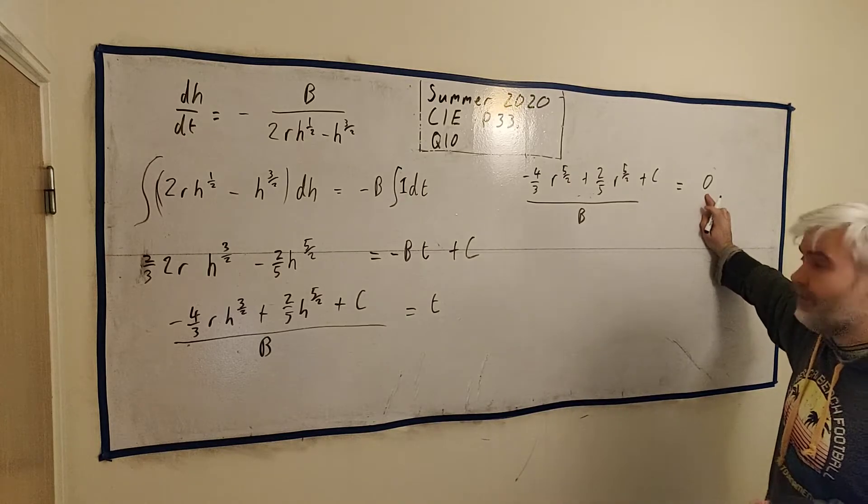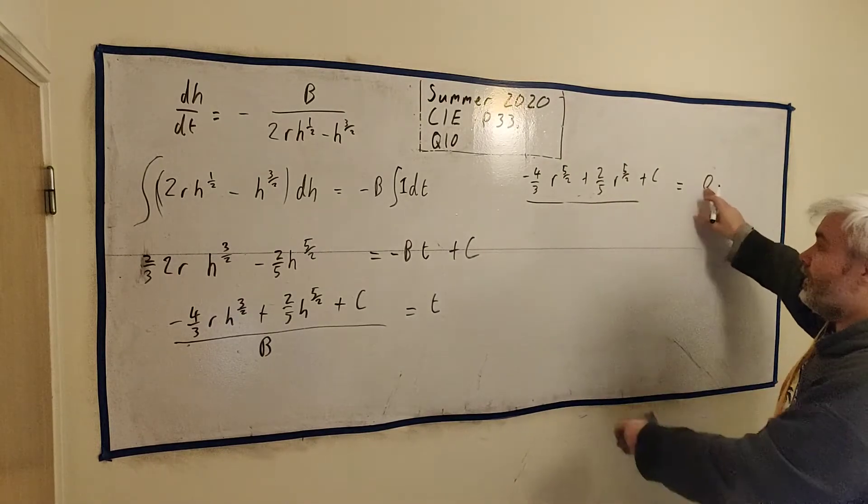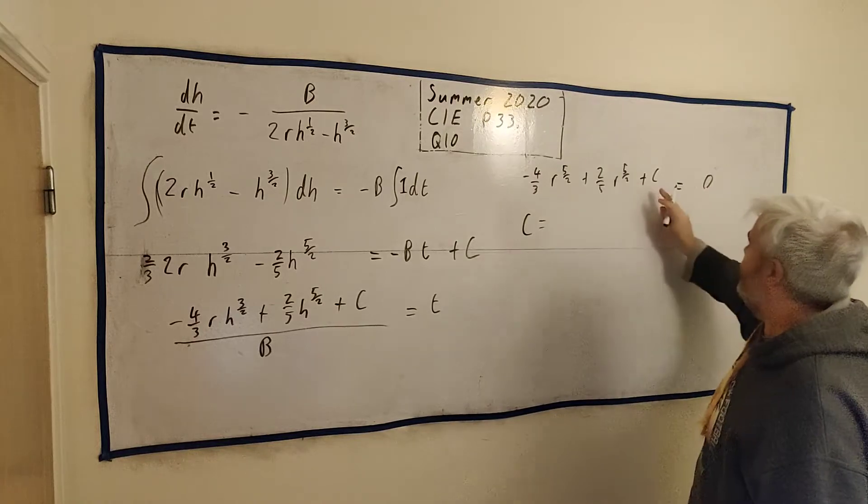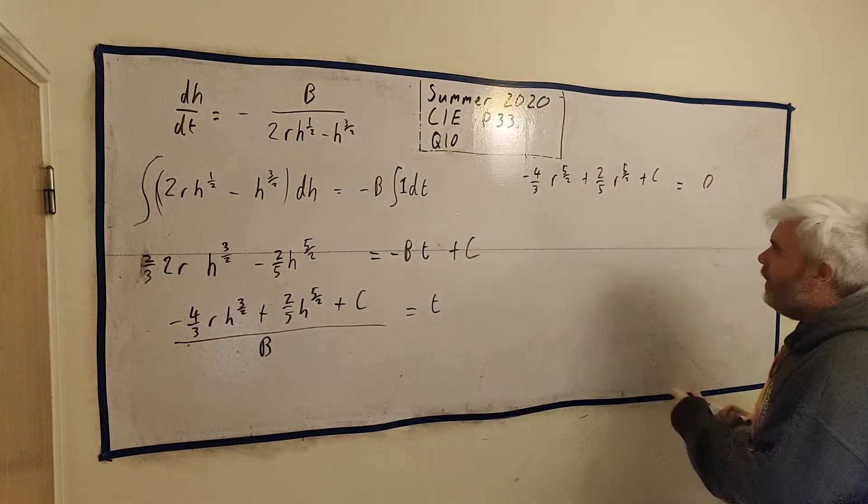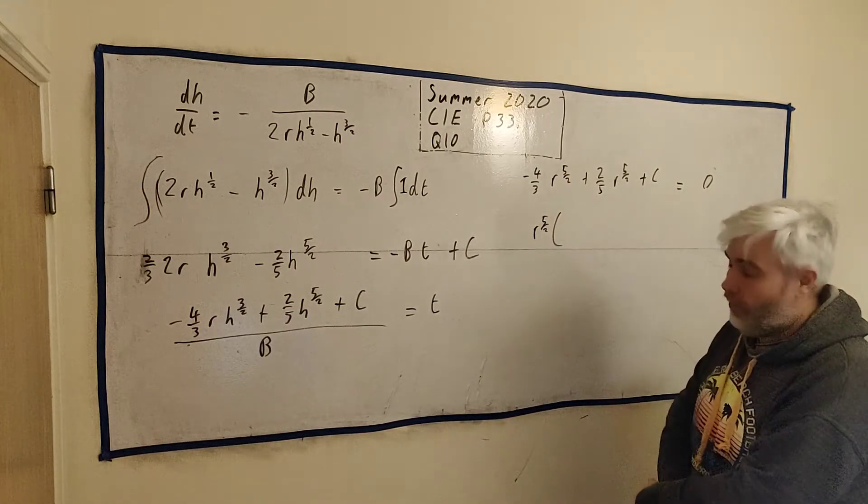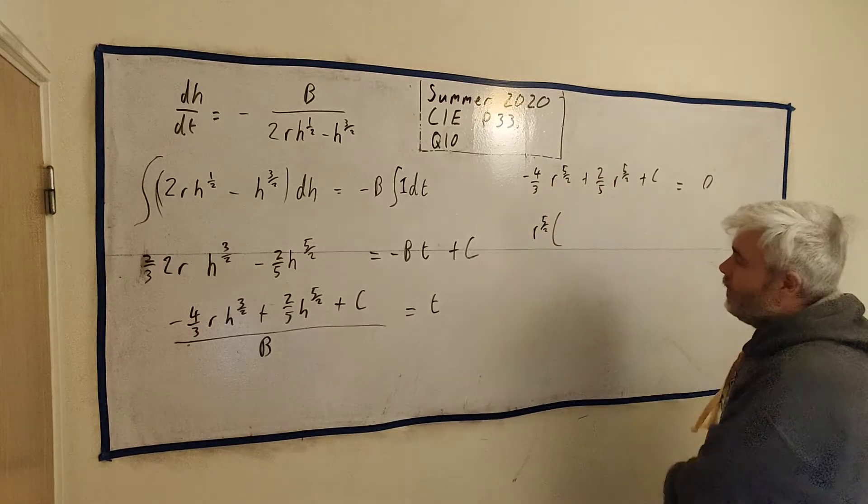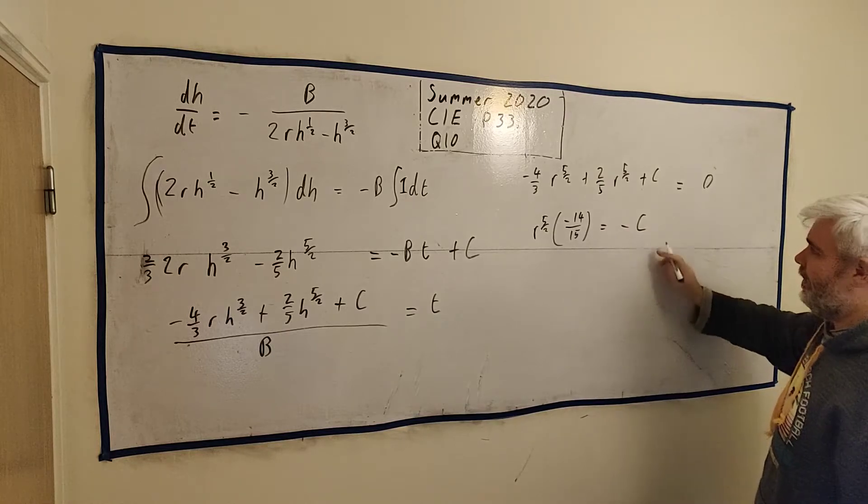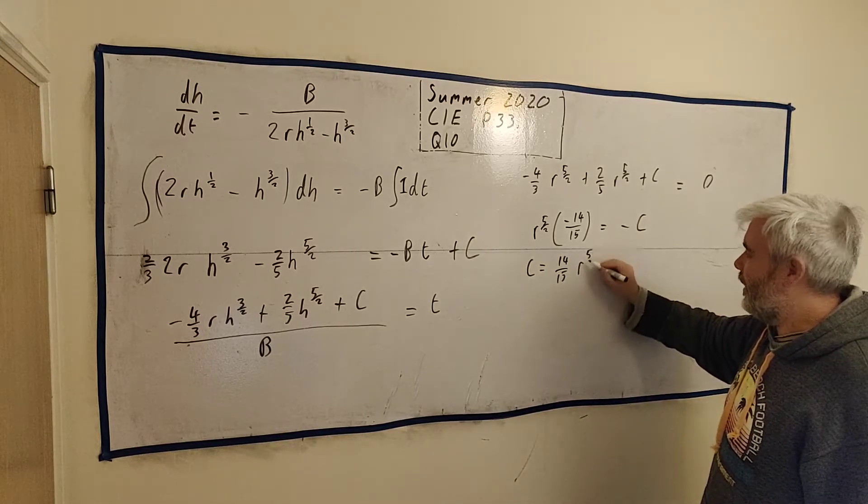Because we know lots about h. It's only h here that changes. We know what h is equal when the tank is full - h is equal to r. So basically, we get minus 4/3 and we'll change h to an r, r multiplied by this, we'll get r to 5/2 plus 2/5 r to 5/2 as well, I'm changing h to an r, plus c divided by b is equal to 0. The tank is full, time is equal to 0. That information comes from part a. When the tank is full, time is 0. Tank is full, h is equal r. Time is equal to 0. Multiply both sides by b. 0 multiplied by b just disappears. We want to find out what c is.